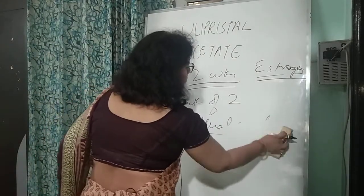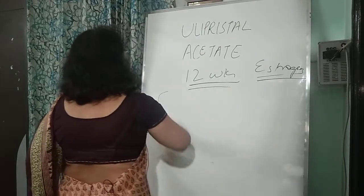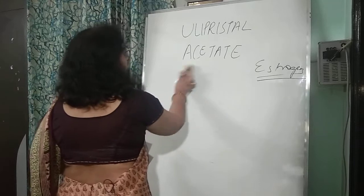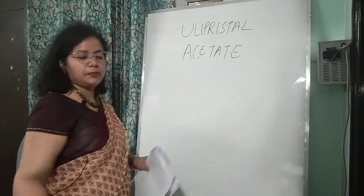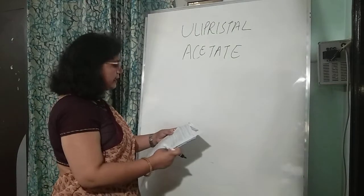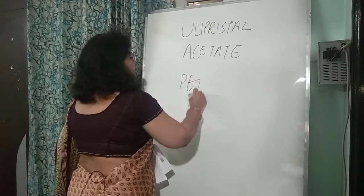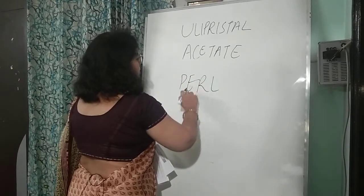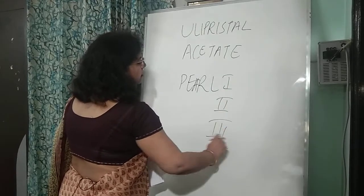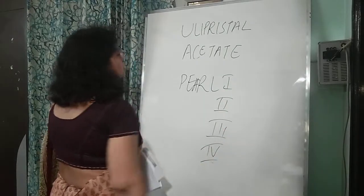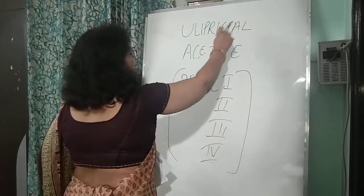In contrast, mifepristone — available as an anti-progesterone — is given as a continuous cycle of six months. The PEARL studies are the major trials associated with ulipristal: PEARL I, PEARL II, PEARL III, and PEARL IV.